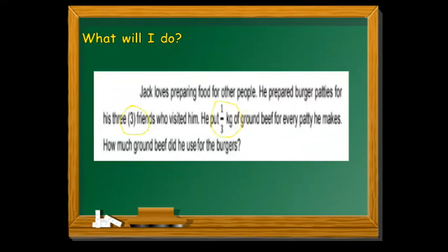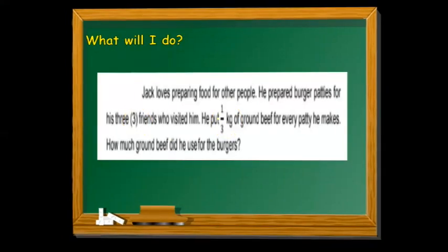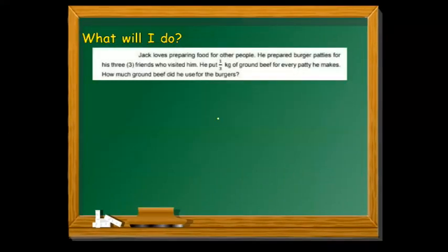We will just multiply three into one-third. It's a whole number and at the same time a fraction. For this scenario, first thing we need to do is we need to change the whole number into a fraction.